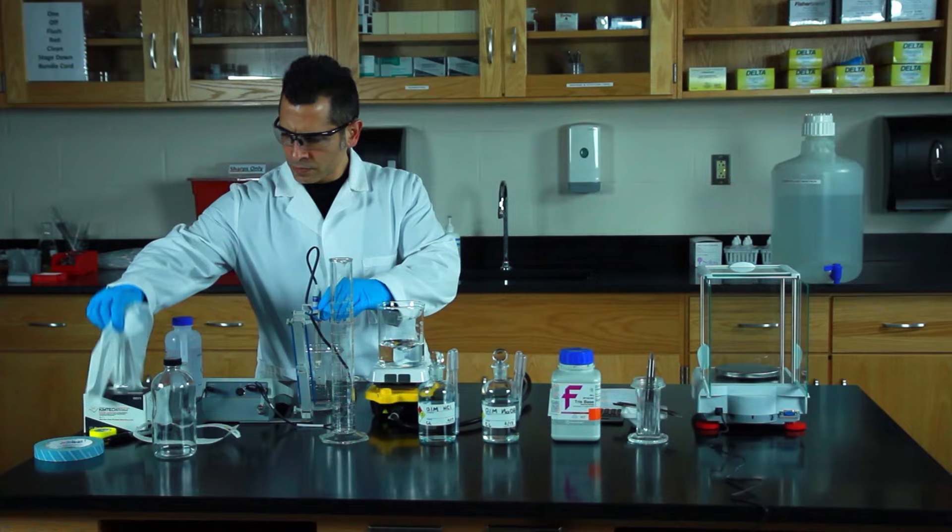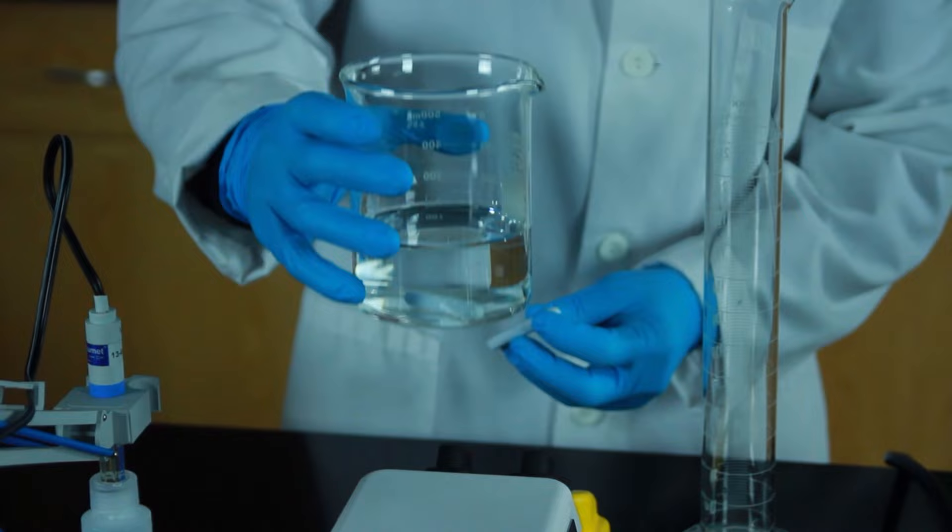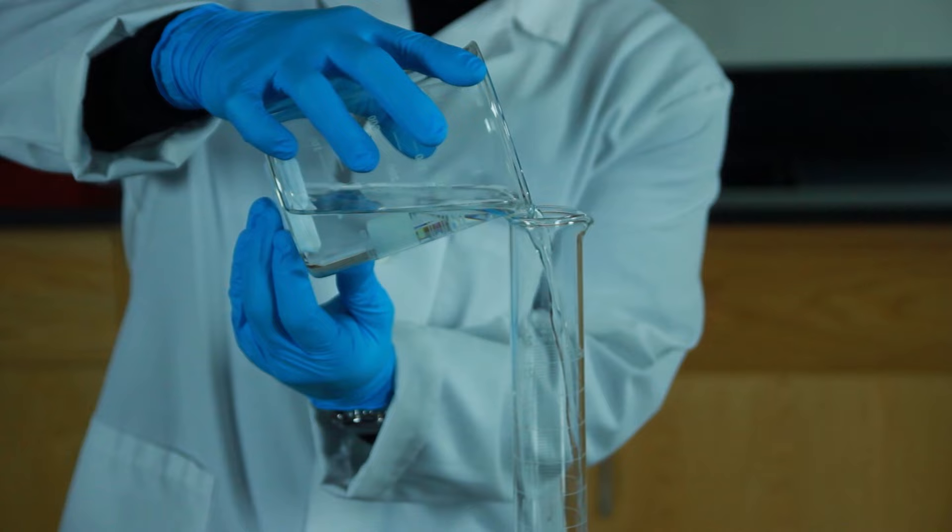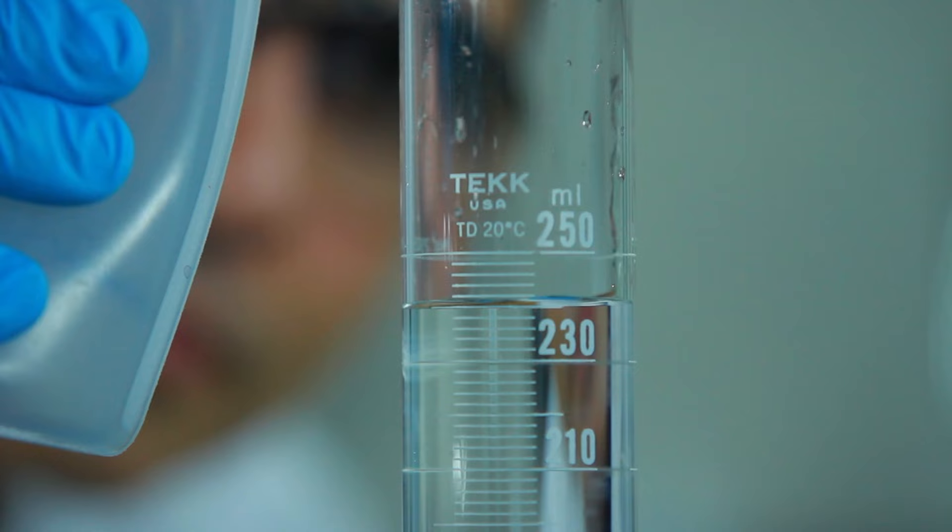Next we need to bring the Tris to the final volume of 250 milliliters. Use a second magnet under the beaker to hold the stir bar in place and slowly pour the buffer into the graduated cylinder. Add distilled water and look at the meniscus to bring the final volume to 250 milliliters.